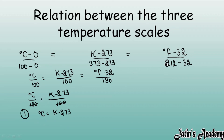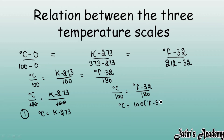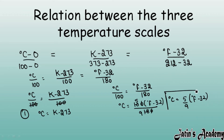Second, we derive the relation between degree Celsius and degree Fahrenheit. The comparison gives: degree Celsius over 100 equals degree Fahrenheit minus 32 over 180. Cross-multiplying: degree Celsius equals 100 times (Fahrenheit minus 32) over 180. Simplifying 100/180 gives 5/9, so degree Celsius equals 5/9 times (degree Fahrenheit minus 32). Remember both these relations to solve numericals.